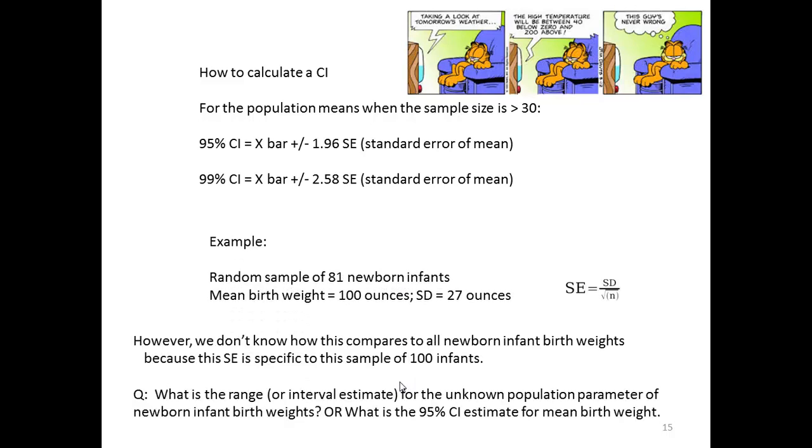So here's an example. Let's say we have 81 newborn babies. We calculate their average birth weight as 100 ounces and the standard deviation as 27 ounces using the formula that you see on the screen.